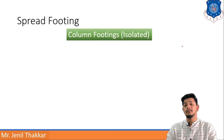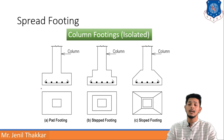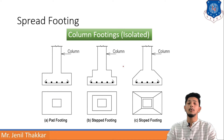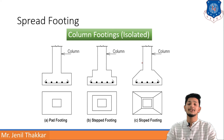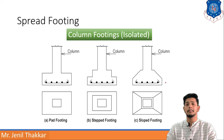Moving forward to isolated column footings under spread footing. Here you can see three images: image A shows a column on a flat rectangular base — a plain or pad footing. The second image shows a stepped footing where the base is stepped. In the third case, the footing is in a sloped, chamfered, or tapered shape. The lower images show the plan view while the upper images show the elevation. These are known as isolated footings or column footings.